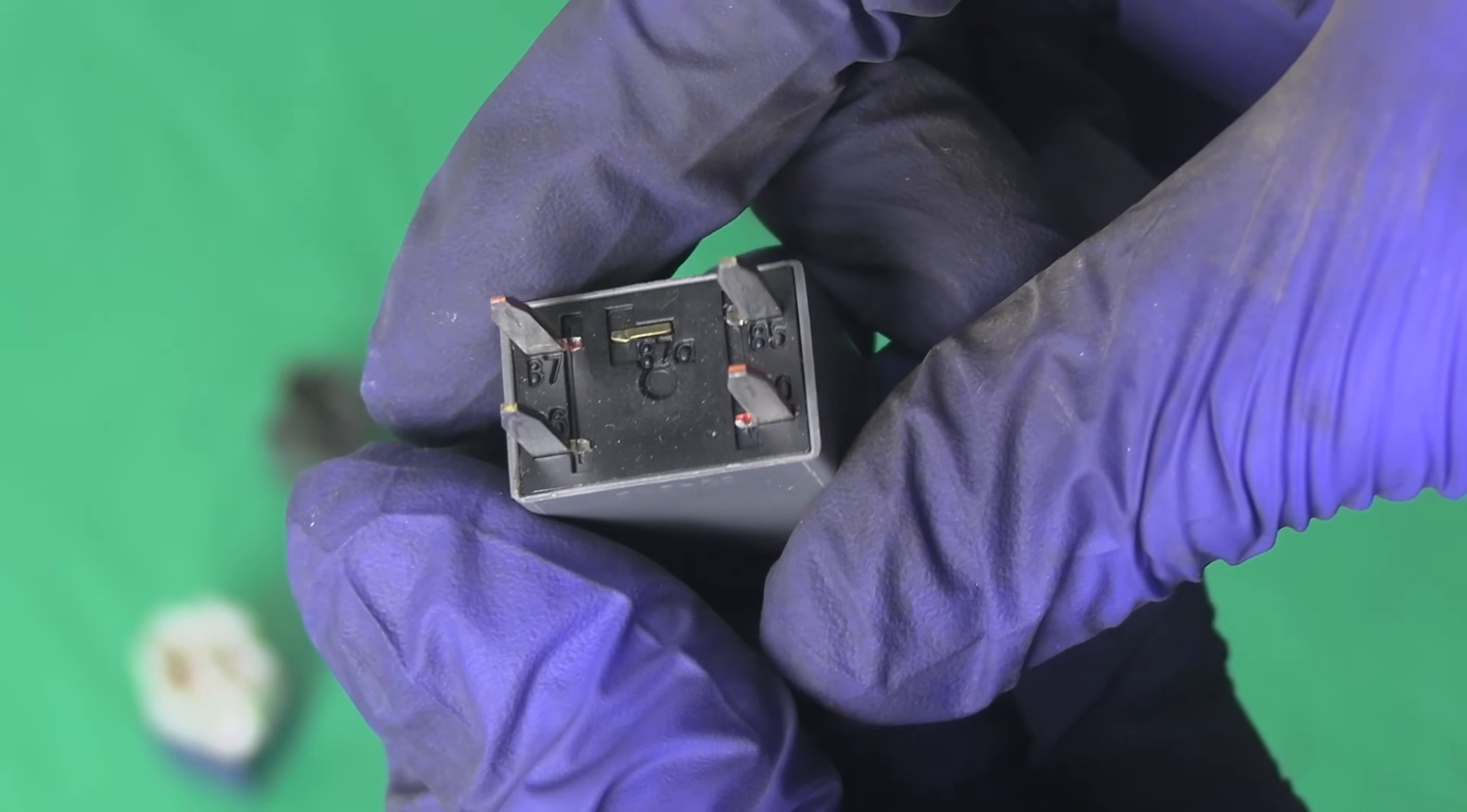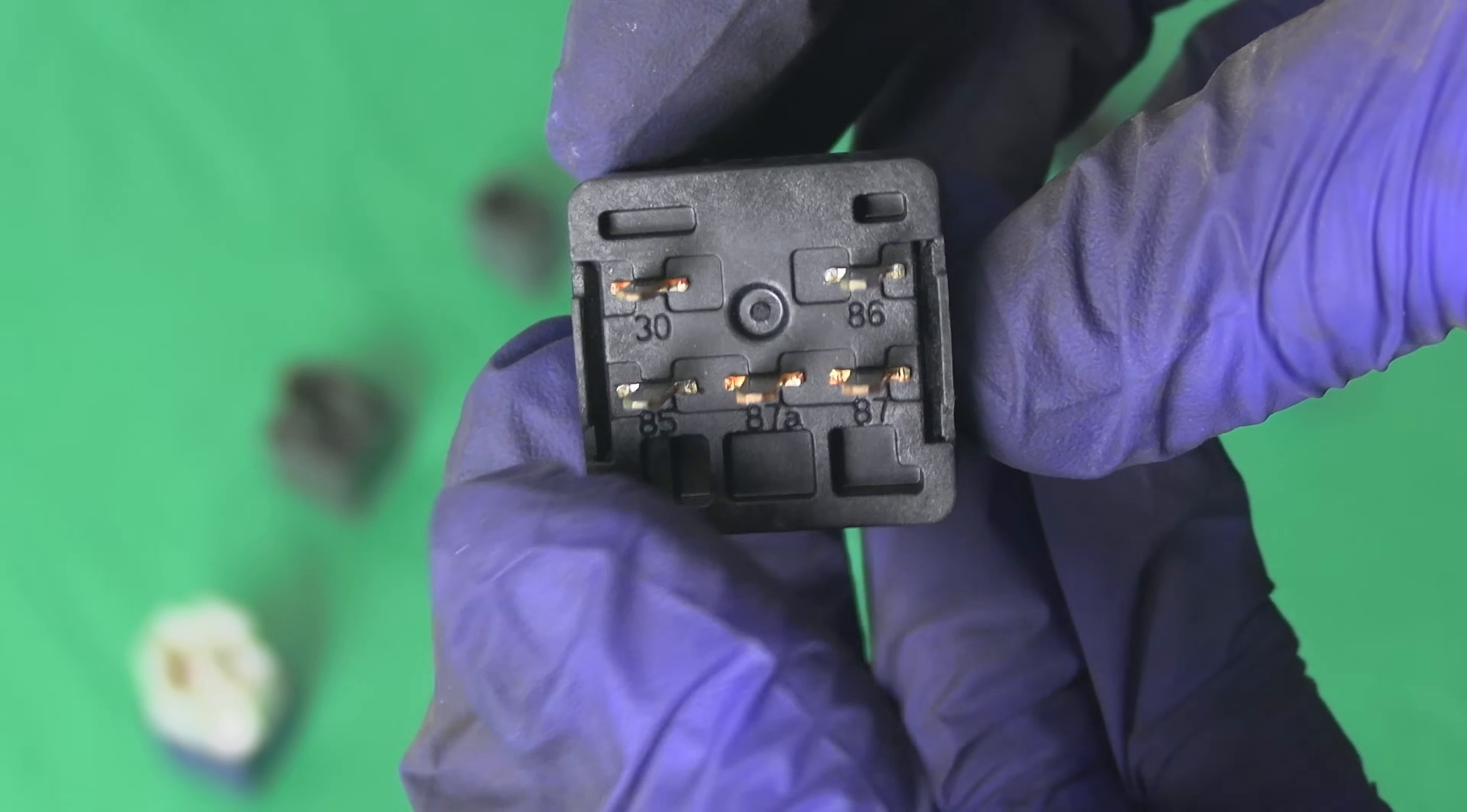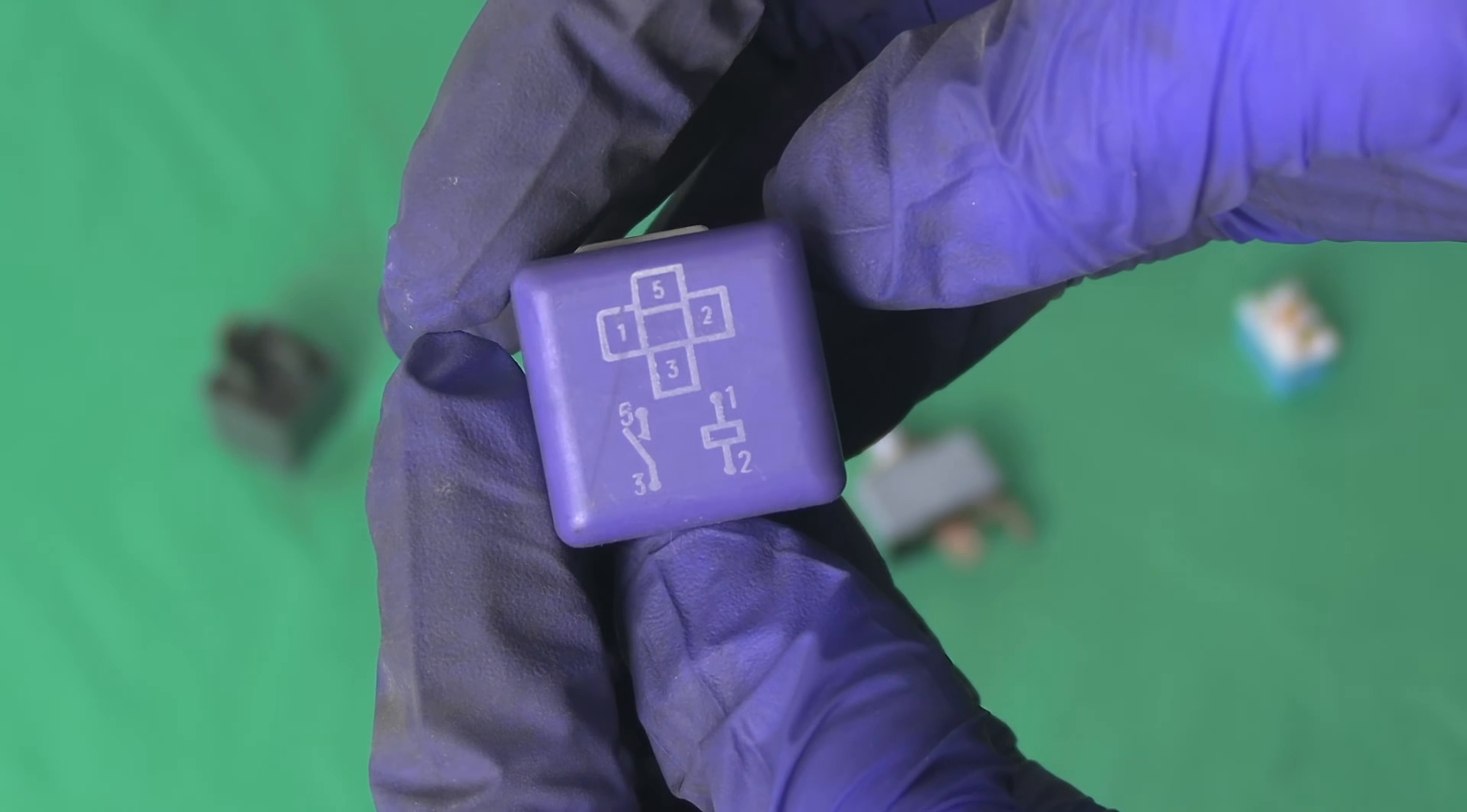If you have a five pin relay, the fifth pin would be 87A. It is part of the load circuit and it is normally closed, which means pin 30 and 87A are connected when the relay is at rest. When the relay is activated, the switch disconnects pin 30 from 87A and connects it to pin 87. Pins on your relay may be numbered differently, like one through five right here, but the concept remains the same.